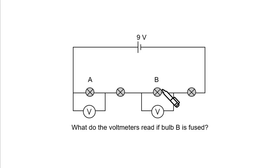Alright, what does it mean if bulb B is fused? It means the filament has melted. It means that there is going to be an open circuit here.